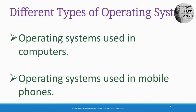Now we are going to learn about a new topic: different types of operating systems. In your computer there is an operating system, and if you have a smartphone, that smartphone also has an operating system. So operating systems are mainly divided into two categories: operating systems used in computers, and operating systems used in mobile phones.